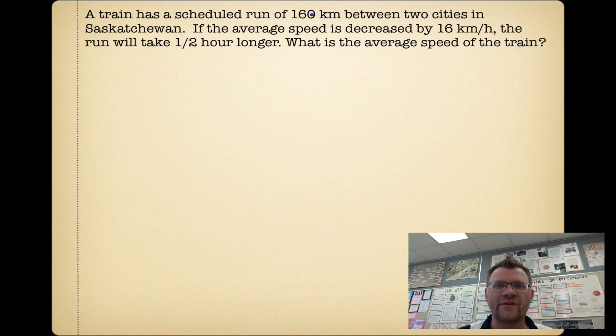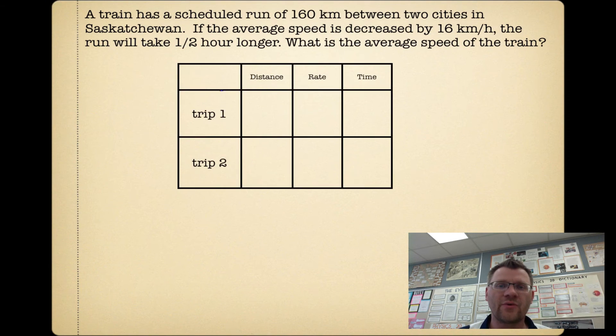So a train has a scheduled run of 160 kilometers between two cities in Saskatchewan. If the average speed is decreased by 16 kilometers an hour, the run will take half an hour longer. What is the average speed of the train? Here we have another table. We're going to use distance, rate, and time. We know that distance equals rate times time. So in the first case, our distance traveled is 160 kilometers, the rate we're going to call r because that's what we're trying to find. And the time is going to be distance divided by rate, so that's 160/r.